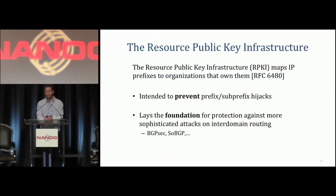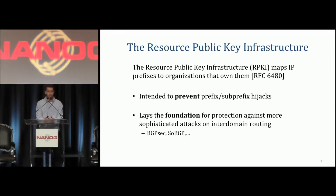Let me start with a clear and brief reminder of what RPKI is. The resource public key infrastructure maps networking objects — specifically IP prefixes — to the organizations that own them. RPKI is intended to do two things: prevent prefix and sub-prefix hijacks, and lay the cryptographic foundation for protection against more sophisticated path manipulation attacks on inter-domain routing, specifically the key mechanisms behind BGPsec.